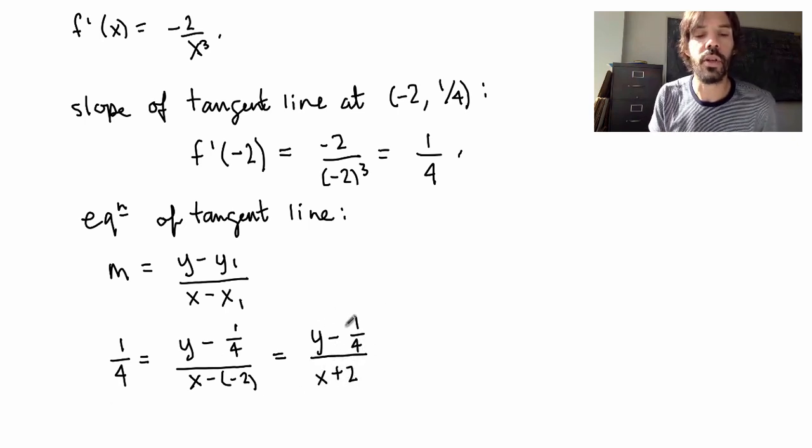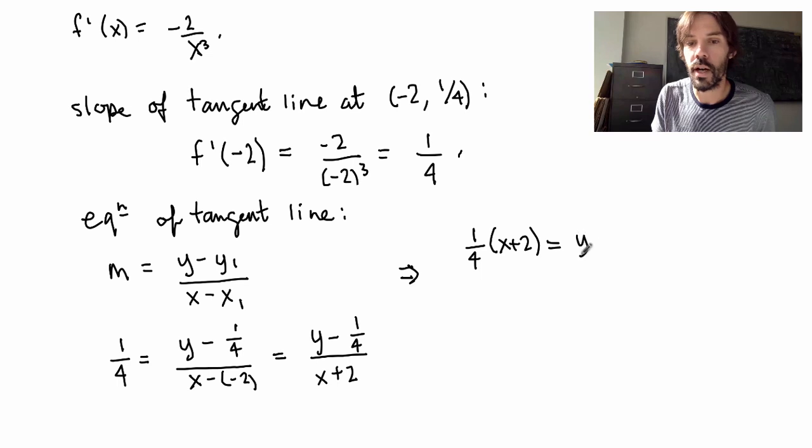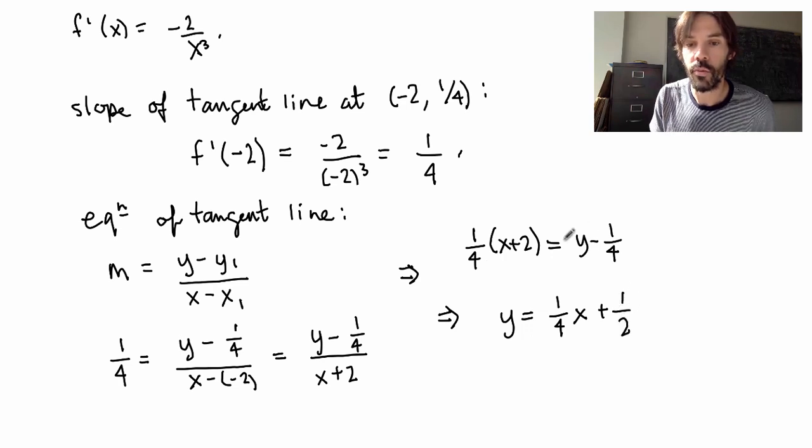Now this is the equation of my line, but I can put it in a slightly better way by multiplying by x plus 2 here. So what I get is 1 over 4 times x plus 2 is equal to y minus 1 over 4. And in fact, I could even put the equation a better way by bringing the y on the left-hand side and putting everything else on the right-hand side. I would get y is equal to 1 over 4 times x plus 2 over 4, which is just 1 half. Bring that on the other side, plus 1 over 4.